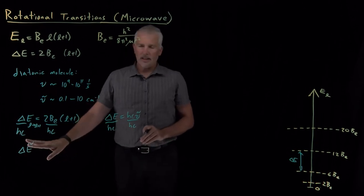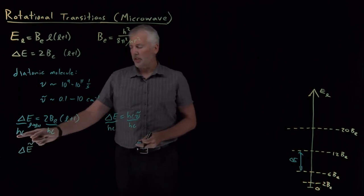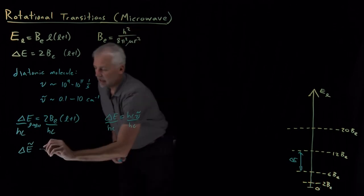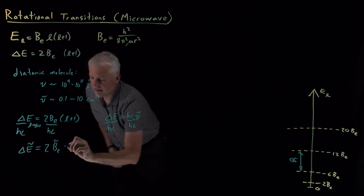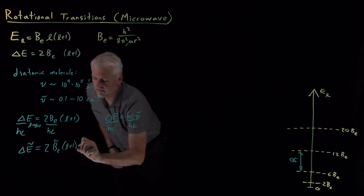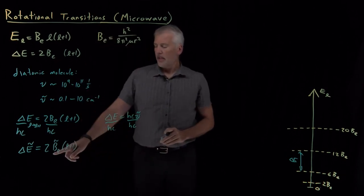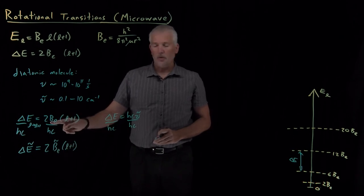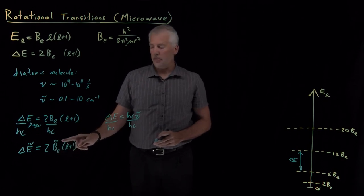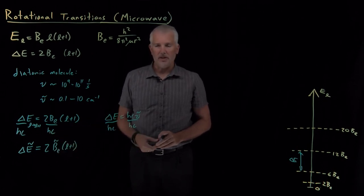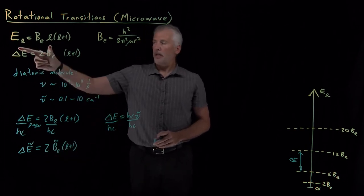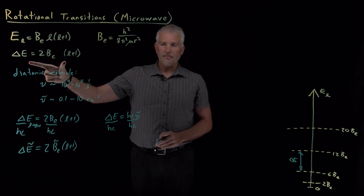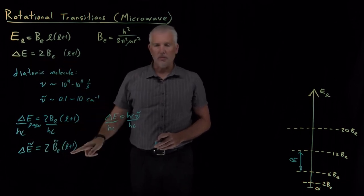We know what that means is take the delta E, convert it to units of wave numbers, and we do that by dividing by HC. And on the right, I can write twice B sub E with a tilde on top. That tells me that I take whatever the rotational constant is that has units of energy, in order to convert it to units of wave numbers with the tilde on top, I just divide by HC. So this is a more compact version of the equation. It's exactly the same as this equation, but this one's written in terms of energies, this one's written in terms of wave numbers.